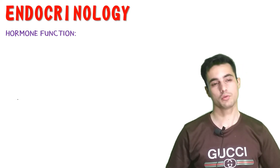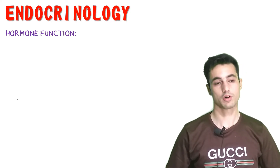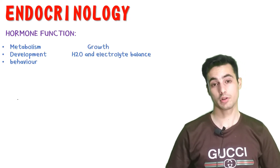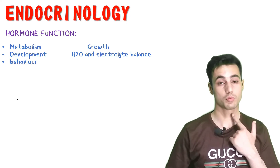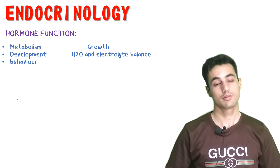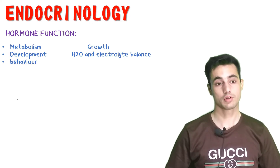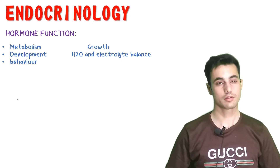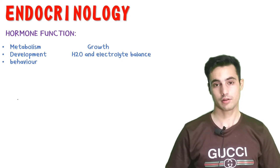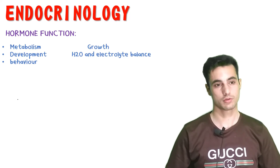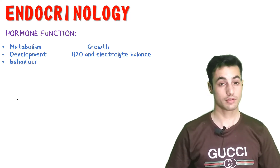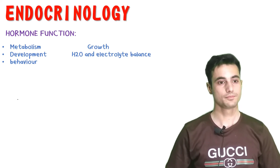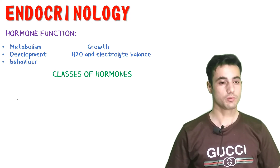Hormones maintain homeostasis but also serve other functions. The thyroid hormone, T3 and T4, regulates metabolism throughout the body. Human growth hormone increases the length and thickness of bones as well as the growth of tissues. Aldosterone, a special hormone in our kidney, regulates water and electrolyte balance.